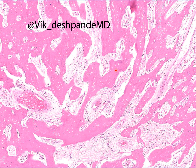This is what a parosteal osteosarcoma looks like in the interior of the lesion: broad, thick seams of bone surrounded by relatively hypocellular stroma. The nuclei on most of these seams of bone are dropped out because of over-decalcification. You're probably asking yourself, where are the neoplastic cells? They're here — just very few, and they are hard to see.